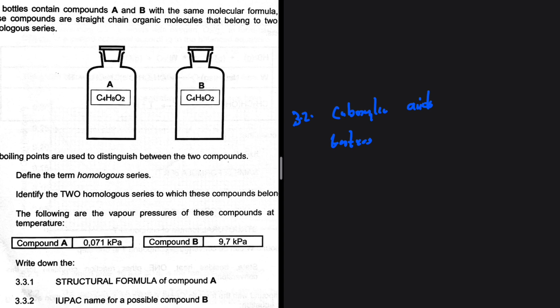So we know that the higher the boiling point, the lower the vapor pressure. So the compound with the lower vapor pressure has to be the carboxylic acid. So this is an acid, and the compound with a higher vapor pressure has to be an ester.